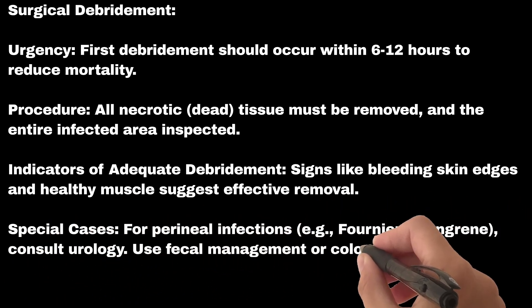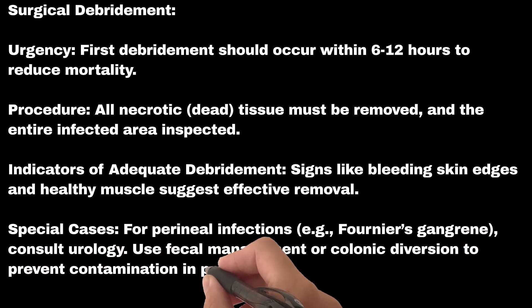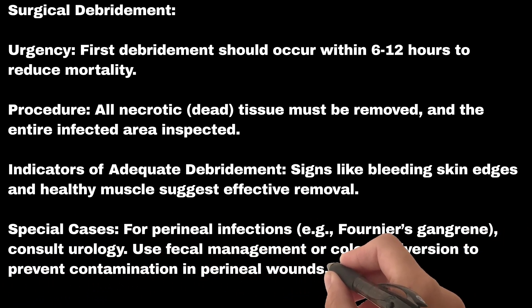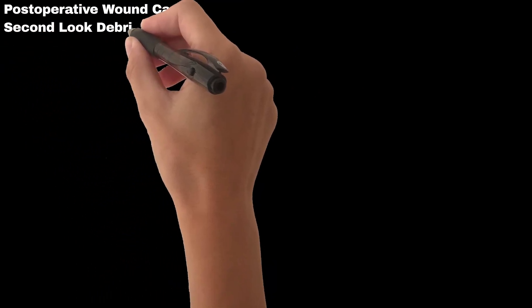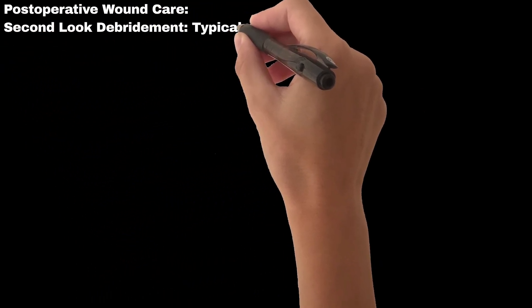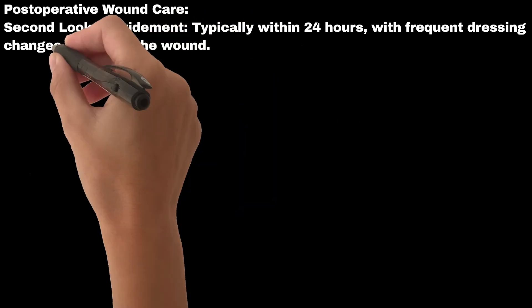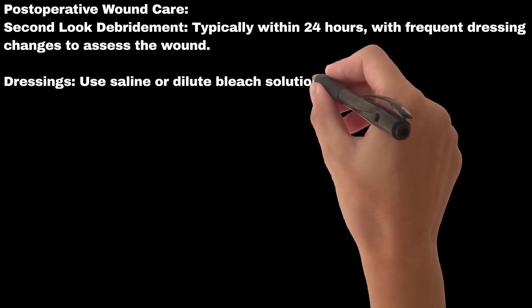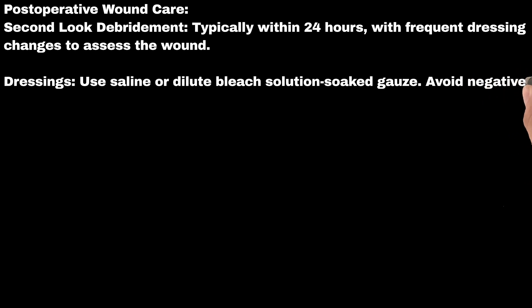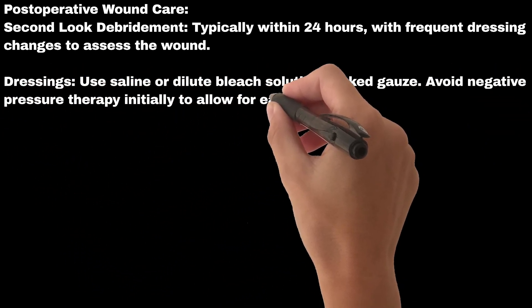Surgical debridement management may include colonic diversion to prevent contamination in perineal wounds. Postoperative wound care includes second-look debridement, typically within 24 hours, with frequent dressing changes to assess the wound. Dressings use saline or dilute bleach solution-soaked gauze; avoid negative pressure therapy initially to allow for easy wound inspection.